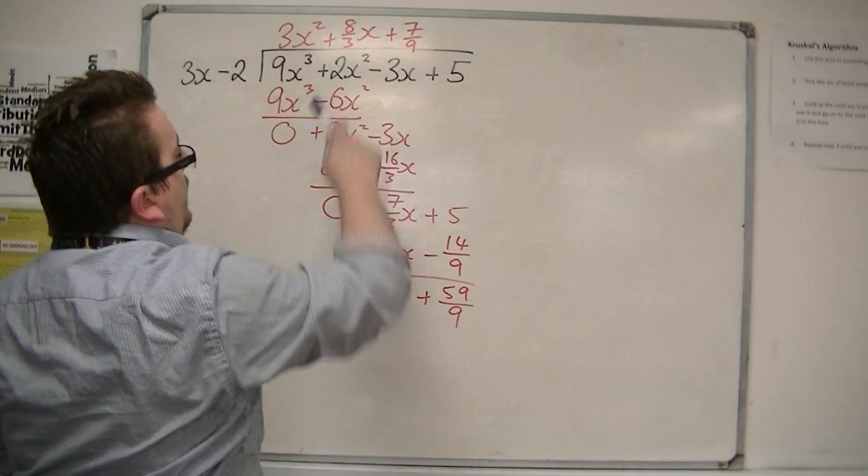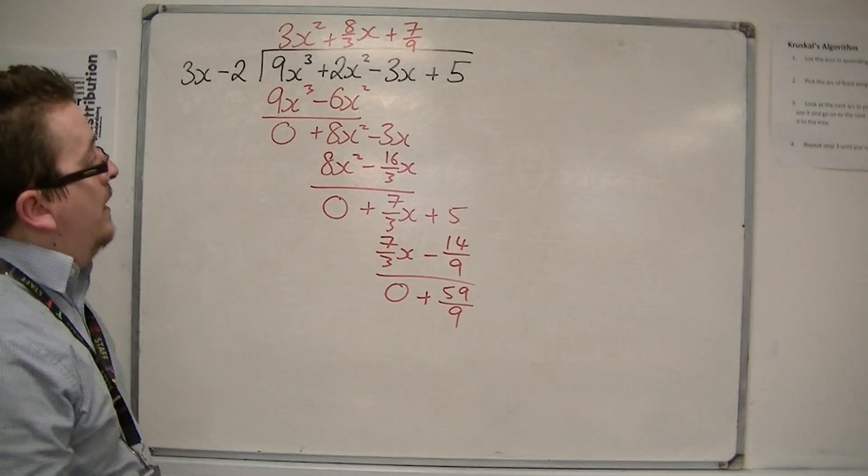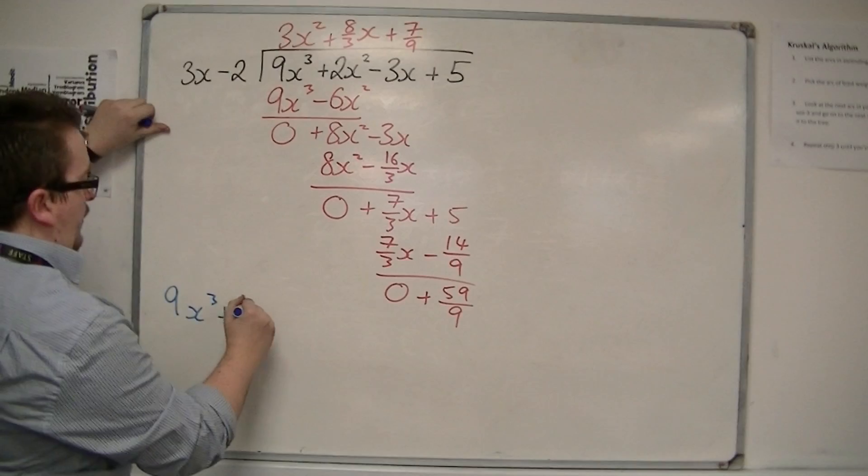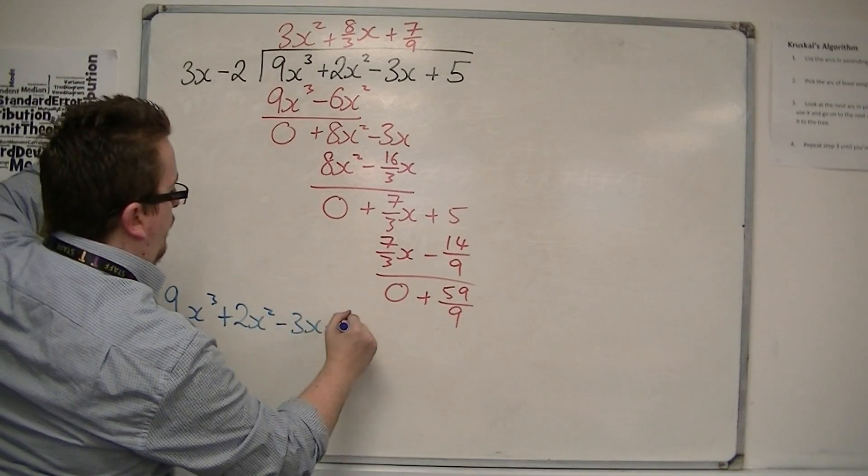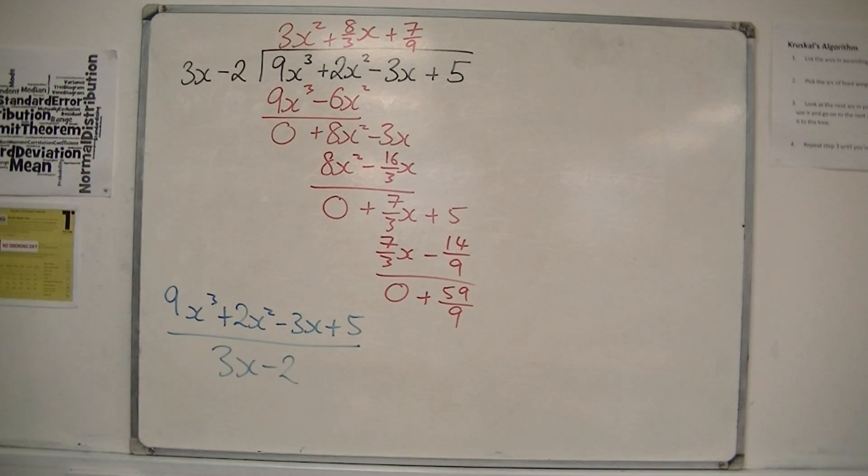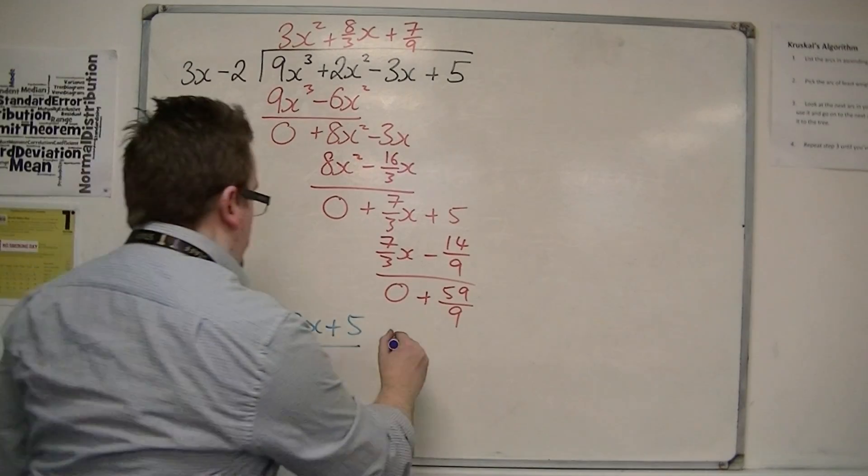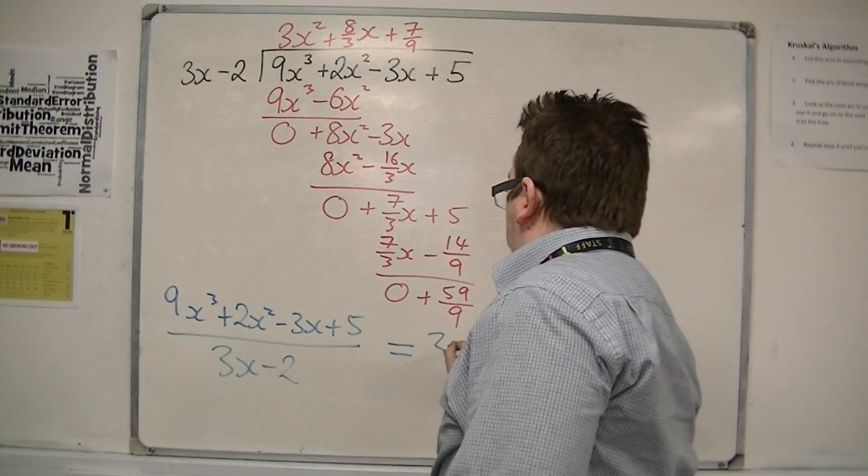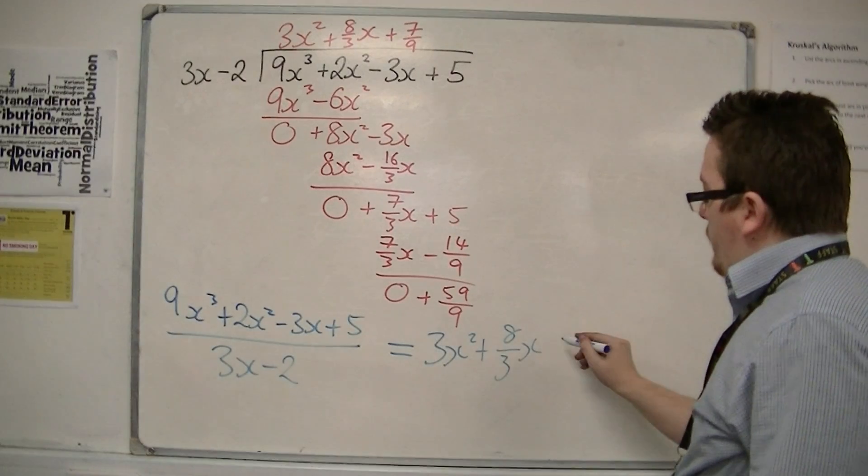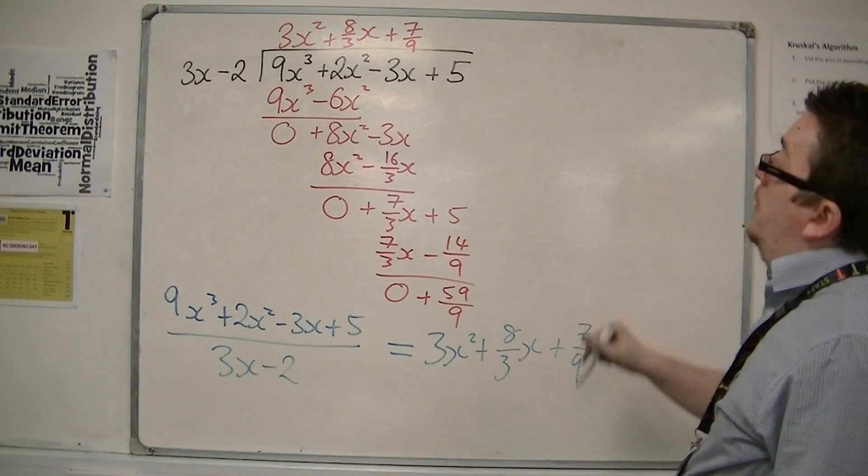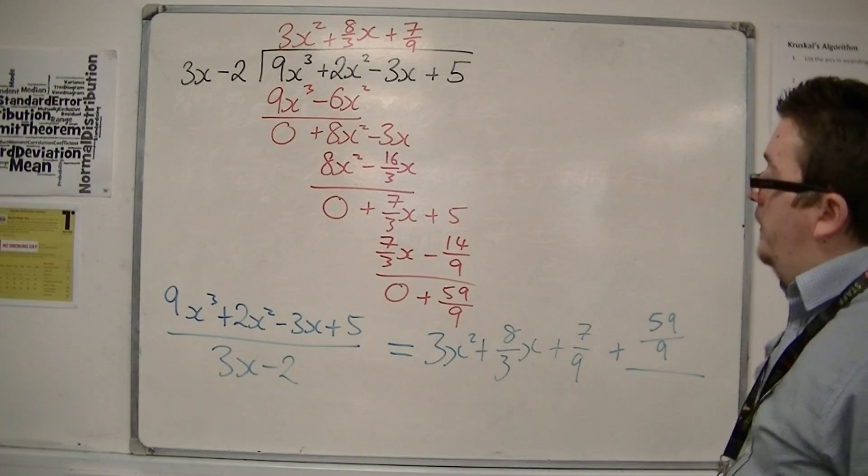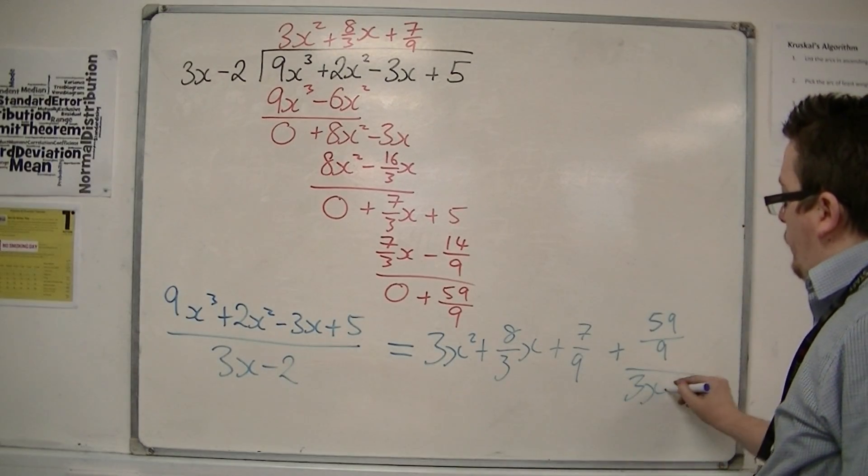Here is my result, and here is my remainder. So this would allow you to write what I started off with as 3x squared plus 8 thirds x plus 7 ninths, plus the remainder 59 ninths over the original quotient, 3x minus 2.